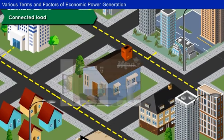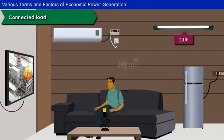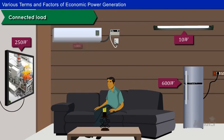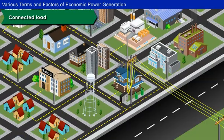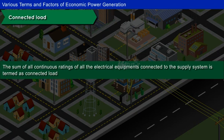The sum of all the electrical equipment in the consumer's premises that are connected to supply and are in operating state is collectively called the Connected Load of the Consumer. For example, if a residential consumer uses a 10W fluorescent lamp, 250W flat screen TV, 600W refrigerator, and 1200W air conditioner, then the connected load of the consumer is equal to 10 plus 250 plus 600 plus 1200W, which is equal to 2060W. Likewise, the sum of all continuous ratings of all the electrical equipment connected to the supply system is termed as Connected Load.